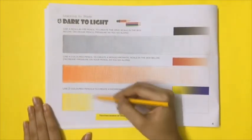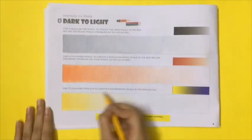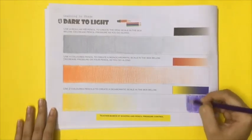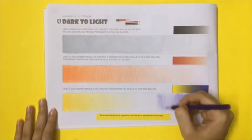In the third box, use two contrasting colors to create a dichromatic scale. Start each color from each end of the box. Meet in the middle and blend the two colors in the center.